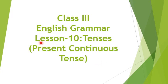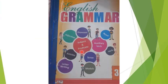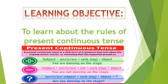Good morning everyone. Today we are starting lesson 10, Tenses. We start with present continuous tense of English grammar book grade 3. The learning objective of this lesson is to learn about the rules of present continuous tense.